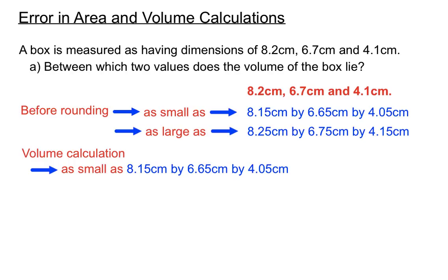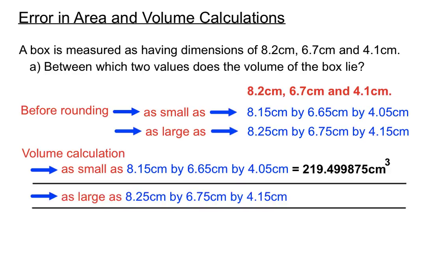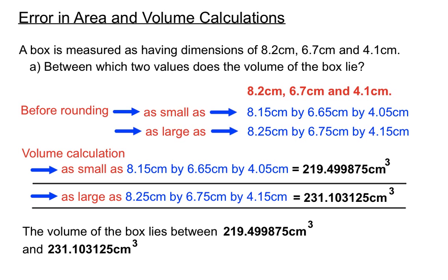Using all the smallest dimensions for the volume calculation gives approximately 219 point something — that's the smallest possible volume. Using all the larger dimensions gives approximately 231 point something — the largest possible volume. So the volume of the box lies between 219.449... and 231.1... We find these two values by taking the smallest and largest possible versions of the original dimensions before rounding.